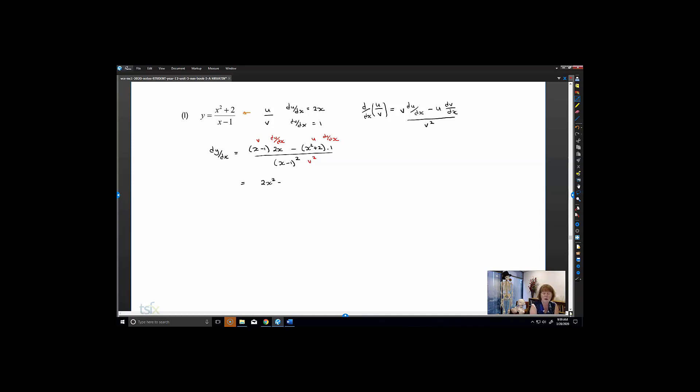What we've got is 2x squared minus 2x minus x squared minus 2. I'm not going to expand the denominator, I'm just going to collect my like terms.